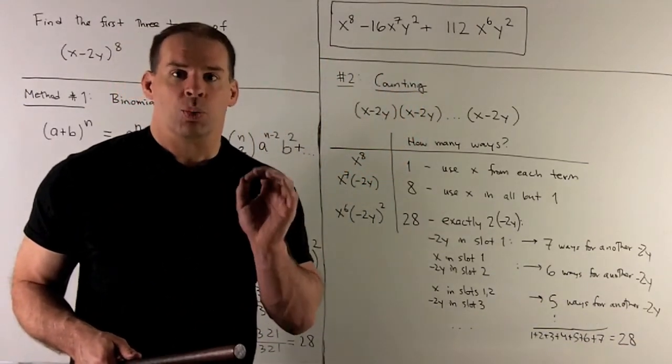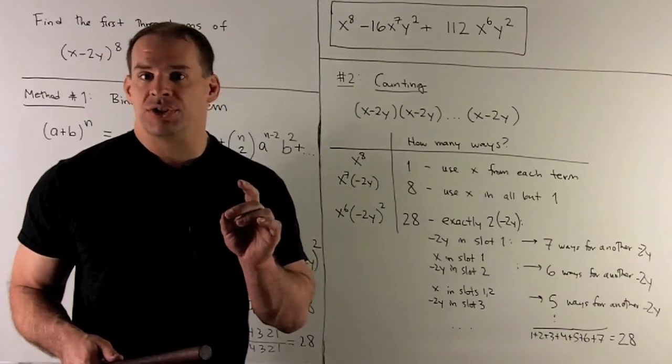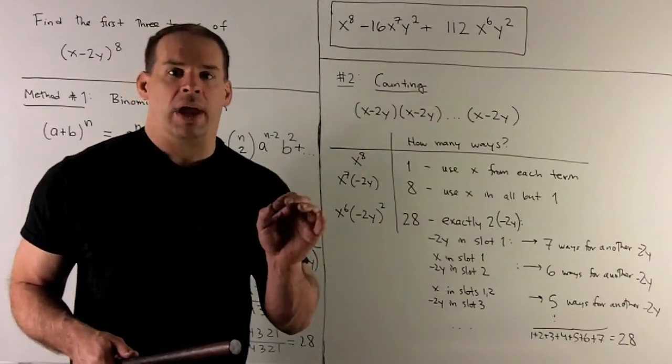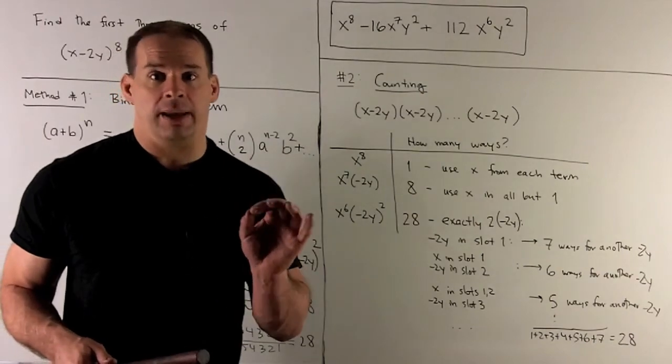Again, this is what your binomial coefficient is doing. There are going to be 28 ways to choose two items from a set of eight.